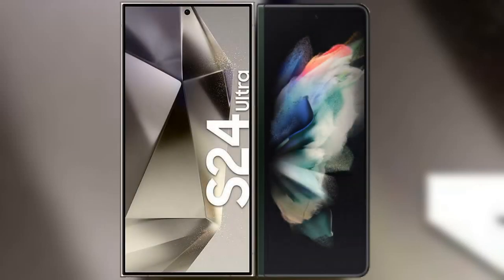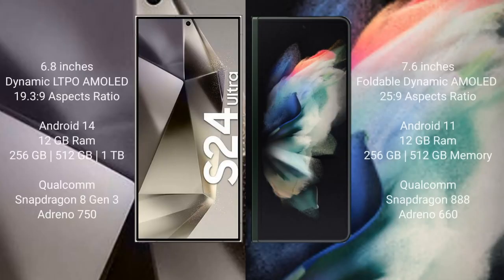I will compare the new Samsung Galaxy S24 Ultra with Samsung Galaxy Z Fold 3. The Samsung Galaxy S24 Ultra comes with a 6.8-inch Dynamic LTPO AMOLED display at 19.3:9 aspect ratio. The Samsung Galaxy Z Fold 3 features a 7.6-inch foldable Dynamic AMOLED display at 25:9 aspect ratio.